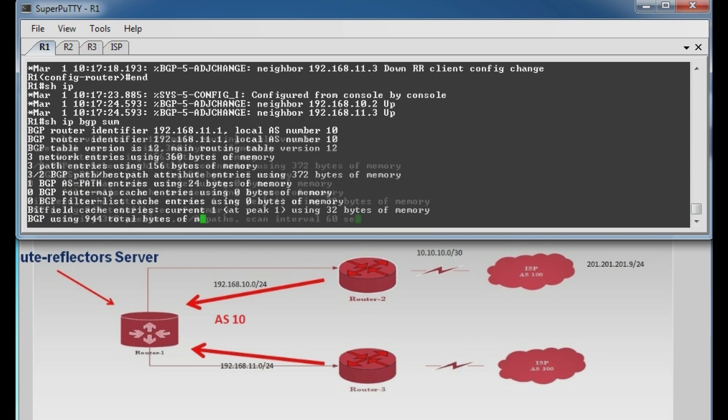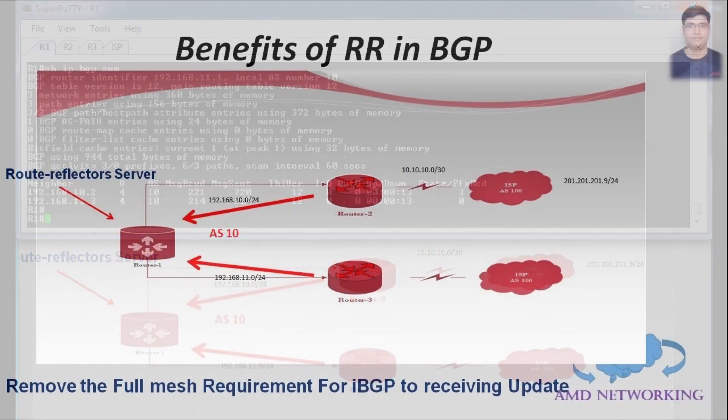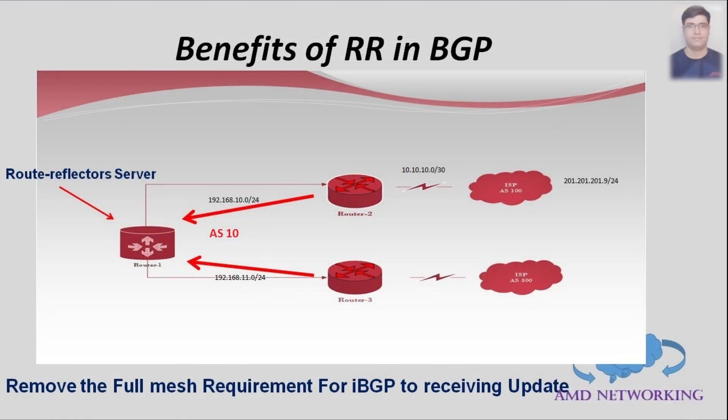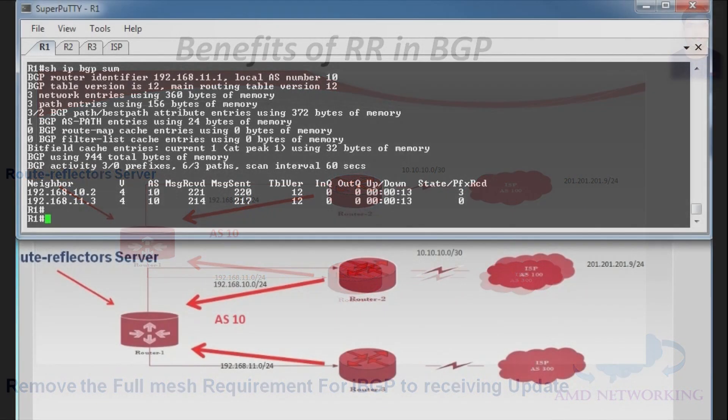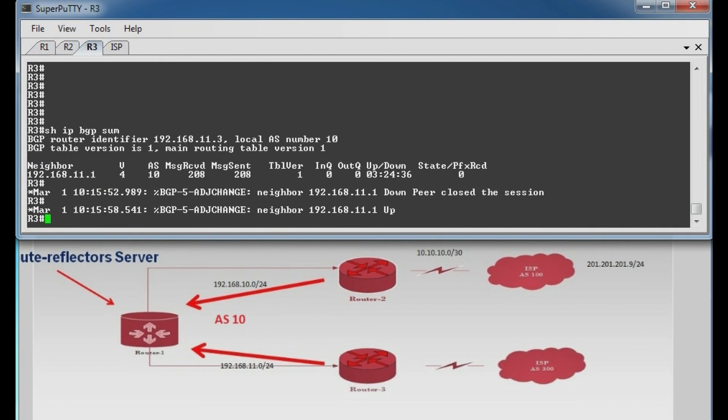So let's go to router 3 to check it receives prefixes from router 1 which it received from router 2 and does it forward to router 3 or not. Let's check.